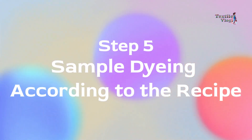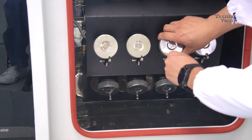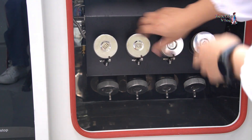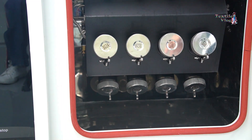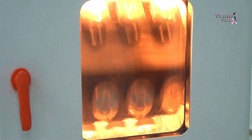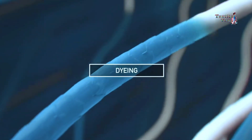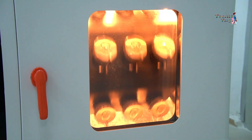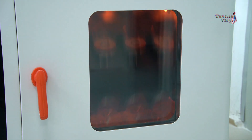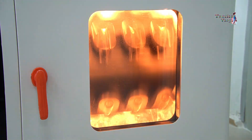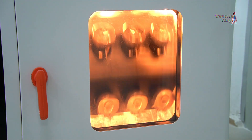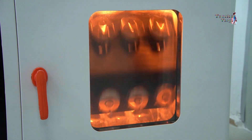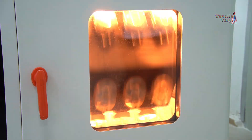Step 5: Sample Dyeing According to the Recipe. Once the recipe is prepared, the sample fabric is dyed according to the new recipe using a lab dyeing machine. These machines use infrared radiation to heat the dye bath, which in turn heats the fabric and allows the dye to penetrate the fibers. This is where the magic happens — the fabric transforms into the perfect color for the buyer's requirements. If everything goes as planned, we'll have the perfect sample.